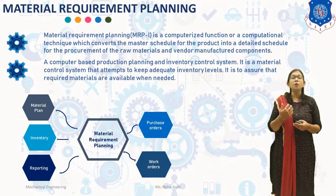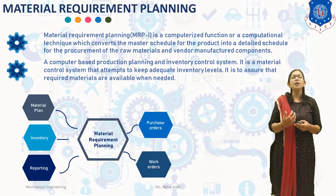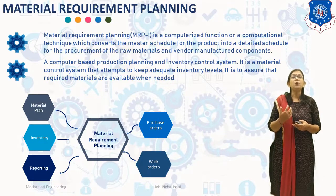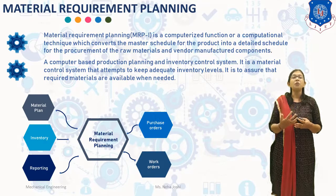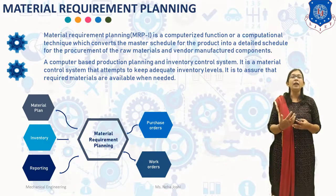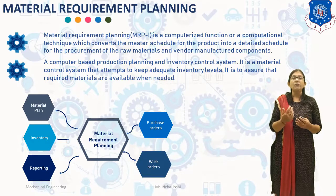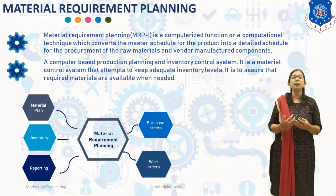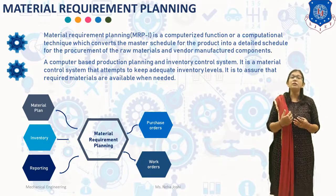Material Requirement Planning is a complicated function. It requires a lot of data compilation and processing. The master scheduling provides a weekly and monthly production plan for a number of products. Each product contains a number of components, and the different components are made of different materials. The manufacturing schedule for the different components is different, and so is the material procurement schedule. Therefore, MRP-1 requires a high degree of computation and can be done effectively with the help of computers only. An efficient MRP-1 will help greatly in the purchasing function and in minimizing the inventory of the material.